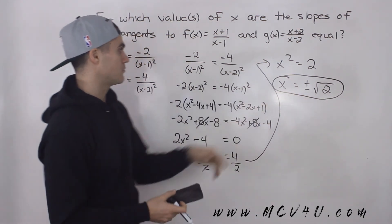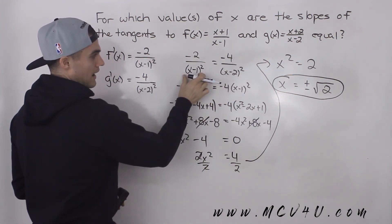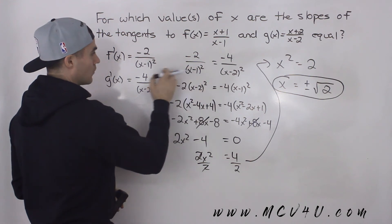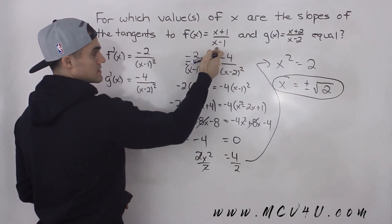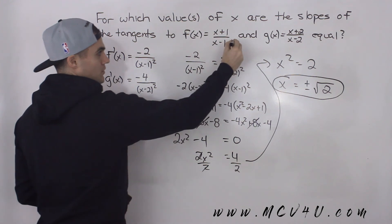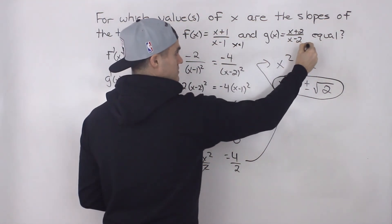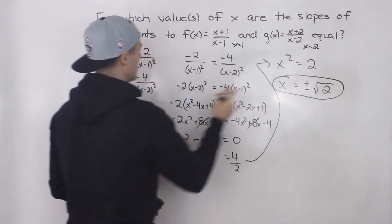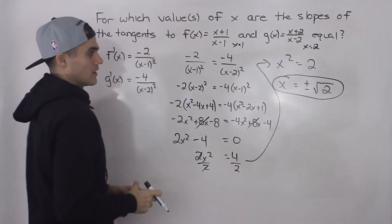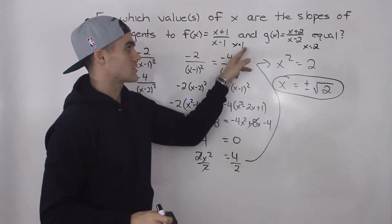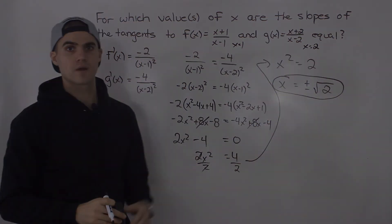You should also plug these values back into the originals to make sure they're not vertical asymptotes. This function has a vertical asymptote at x equals 1, and this one has a vertical asymptote at x equals 2 — meaning the derivative is undefined there. But plus and minus root 2 are neither of those values, so both x values work. Those are your two answers.